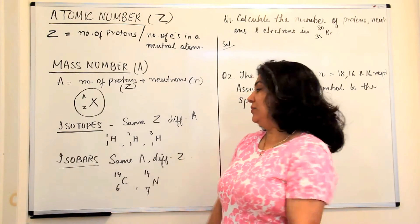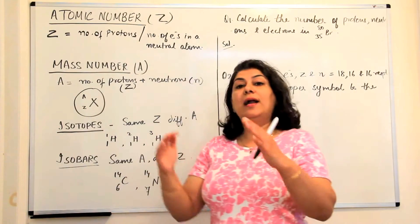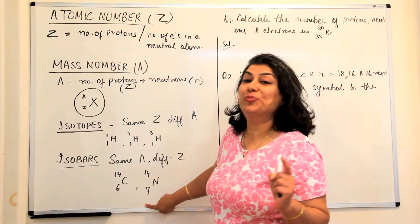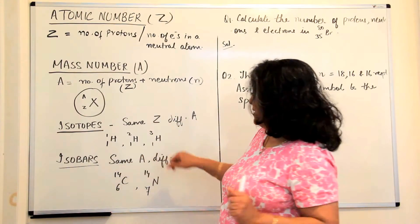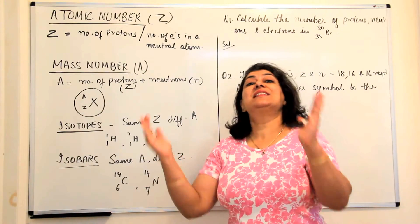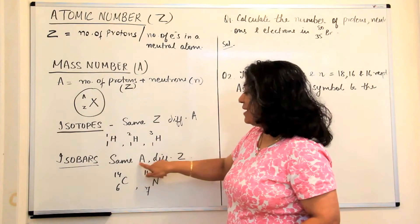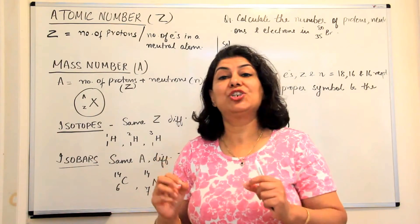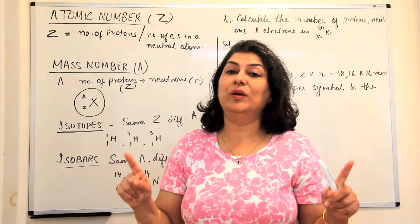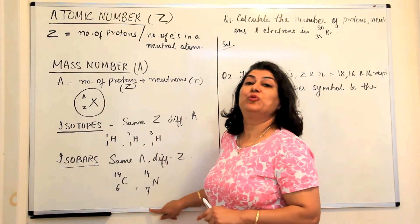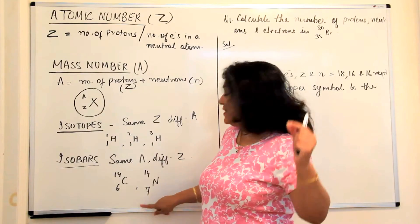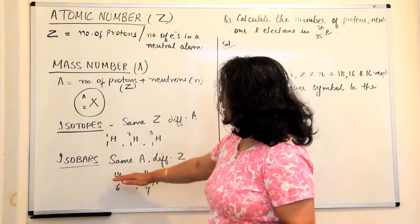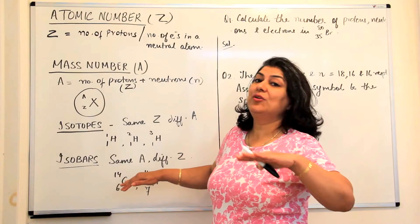So those are isotopes of hydrogen. Isobars, on the other hand, are atoms of different elements — meaning their atomic numbers are different — which have the same mass number A. In other words, they are atoms in which the sum of the protons and neutrons is equal. They may not have the same number of protons, meaning they are atoms of different elements, but their proton-plus-neutron sum is the same, and hence they have the same mass. These are known as isobars.